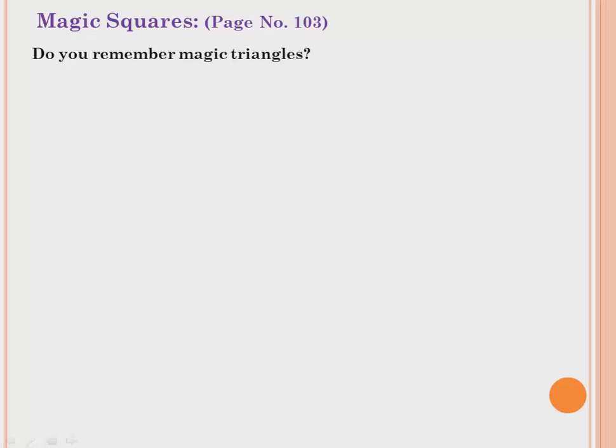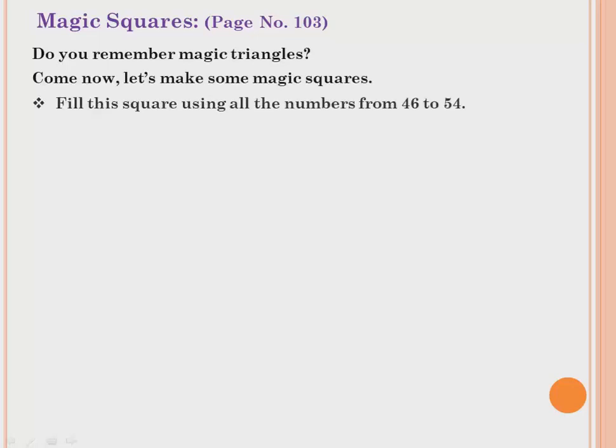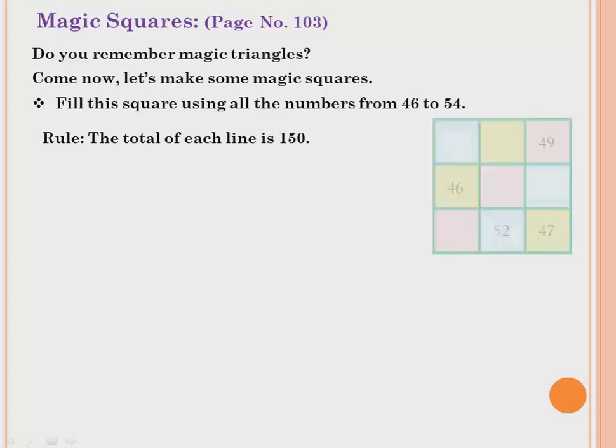Now, magic squares, page number 103. Do you remember magic triangles from fourth class? Now let's make magic squares. Fill the square using all the numbers from 46 to 54. The rule is that the total of each line — whether row or column — should be 150.